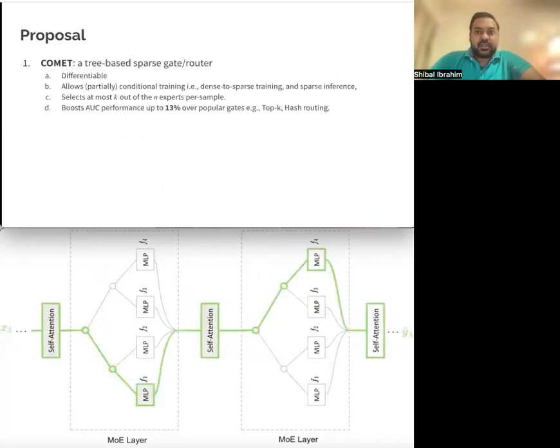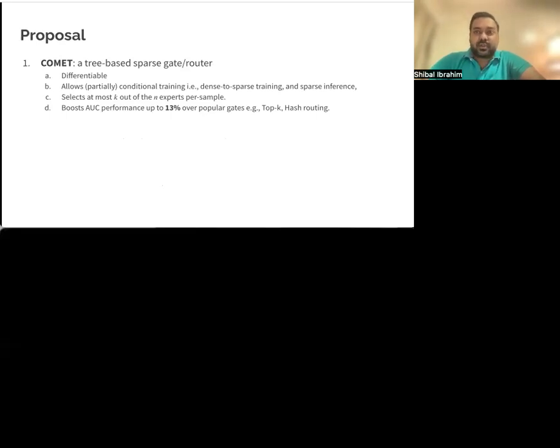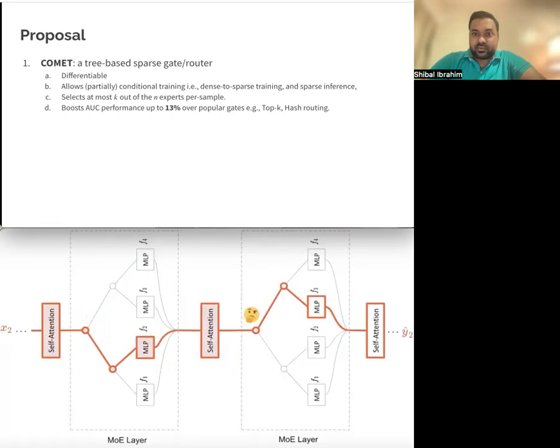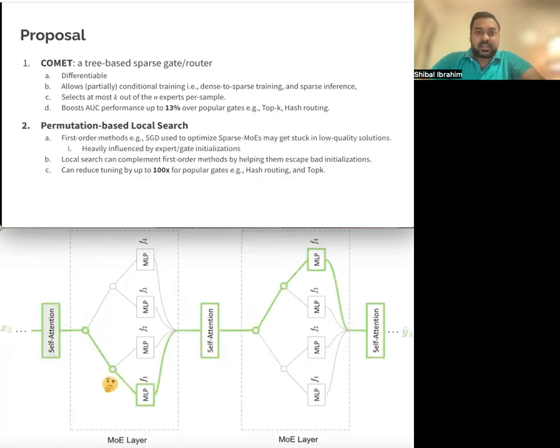We propose COMET, a tree-based sparse gate. It's differentiable, allows partially conditional training and sparse inference, and can select at most k out of the n experts per sample. We show that it can boost AUC performance up to 13% over popular gates like top-k and hash routing on standard vision and recommender system datasets.